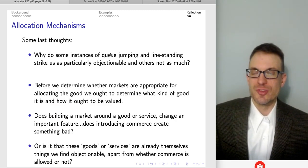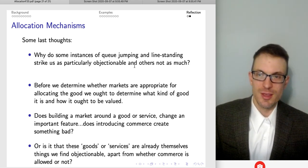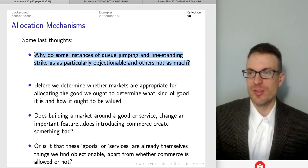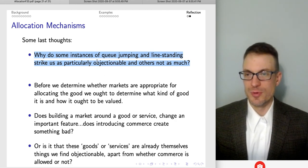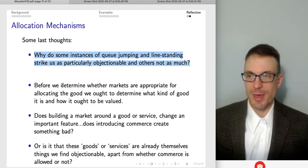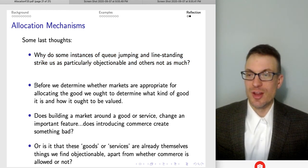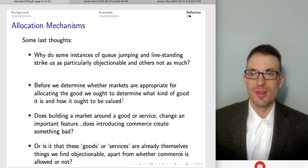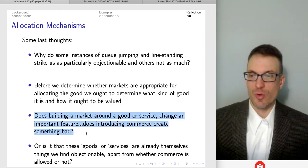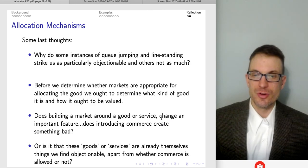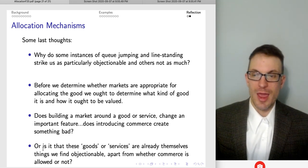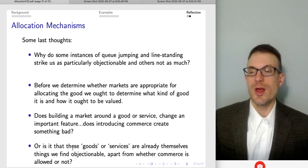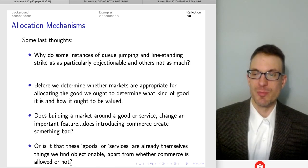Some last thoughts. So why do some instances of queue jumping and line standing strike us as particularly objectionable and others not so much? So we thought about some of these examples probably strike you as being super objectionable. Others maybe not as bad, maybe not bad at all. So one of the questions then is, well, maybe before we determine whether markets are appropriate for allocating the good, well, we ought to determine what kind of good it is, and then how it ought to be valued. A couple other questions. So for reflection now, does building a market around a good or service change an important feature? Does introducing commerce change or create something bad as a result? On the other hand, or is it the case that these goods or services are already themselves things we find objectionable, apart from whether or not commerce is allowed? Kind of think about those things.